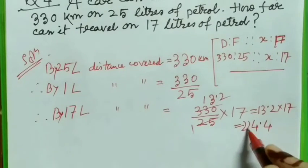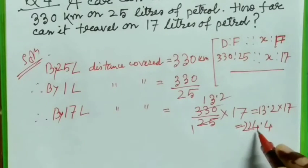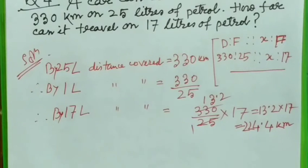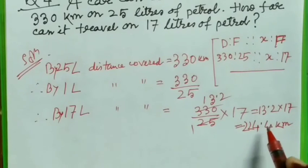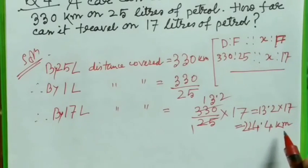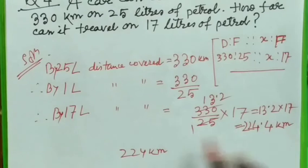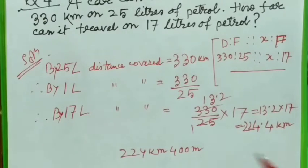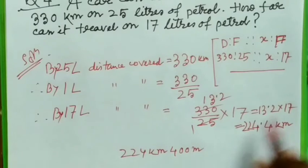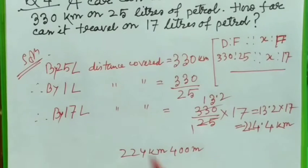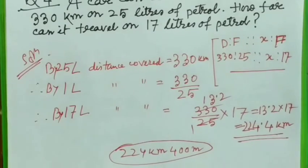This gives 224.4 kilometers. Note that one decimal point has come, so the answer is 224.4 kilometers. Always remember: 224.4 kilometers means 224 kilometers and 400 meters — never think that 0.4 kilometers is 4 meters. So this is the answer.